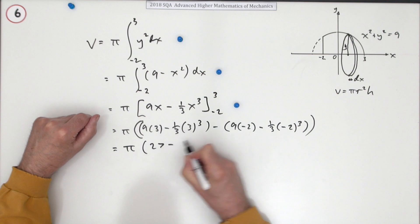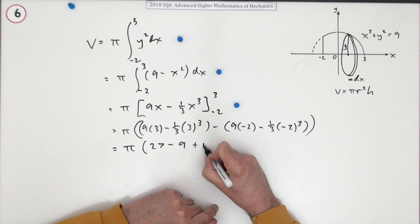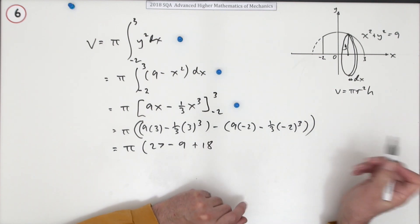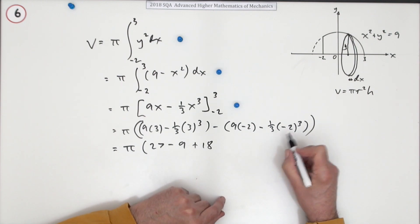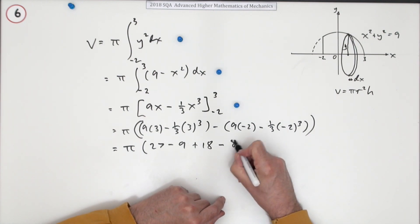So that's a 27. That's just a 3 squared that's left. That's a 9. That's going to be a plus now, but that's an 18. And this is the only one that's going to be a fraction. There's 3 negatives because that cube stays negative. So overall it's negative. And that's going to be 8 upon 3.